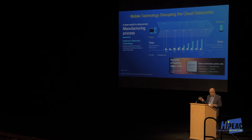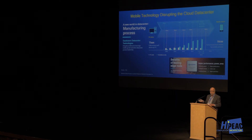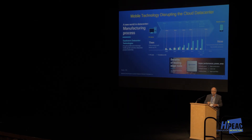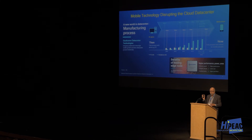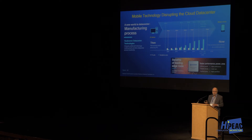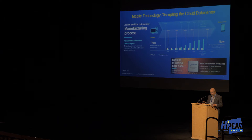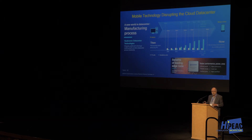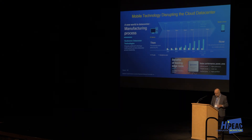I work for a company that builds smartphones, so I have access to a new process node before Intel comes out with theirs. The Skylake I showed you is in 14 nanometers, whereas the chip we announced late last year is the first 10-nanometer server chip in the world. We were able to take advantage of earlier access to the new node, which is important for energy efficiency.